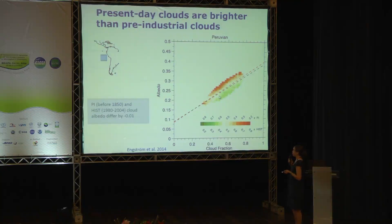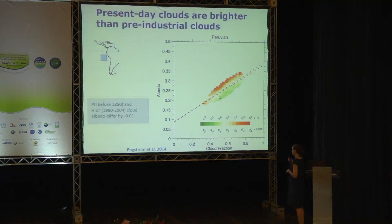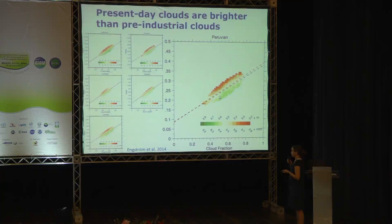We'll stick with the CMIP5 models and the Peruvian region, and compare present-day simulations to pre-industrial simulations. I'm showing albedo versus cloud fraction — a multi-model mean of 20 CMIP5 models — with two sets of simulations in the same plot. The color indicates the ratio of pre-industrial to present-day points: brighter colors mean more present-day points, greener colors mean more pre-industrial points. There is a clear gradient — for any cloud fraction, the albedo is higher in present-day than pre-industrial. Linear regressions on the two sets give a separation in cloud albedo, and this pattern is clear for all the stratocumulus cloud regions.